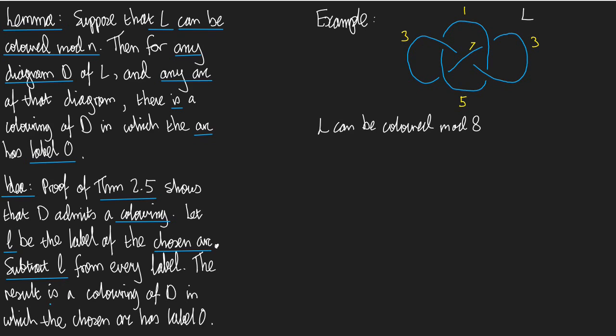What's the result? The result is a colouring of D in which the chosen arc has label 0. So, it's very simple. Take your diagram. It's got some colouring. Modify the colouring so that your favourite arc has label 0.